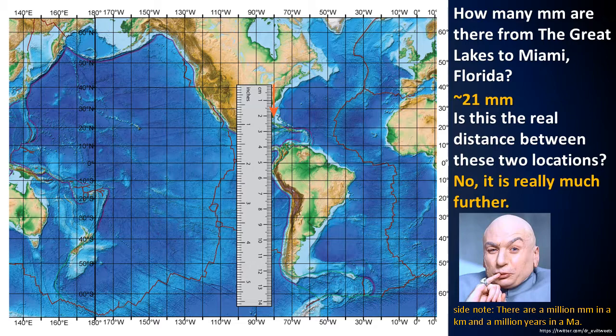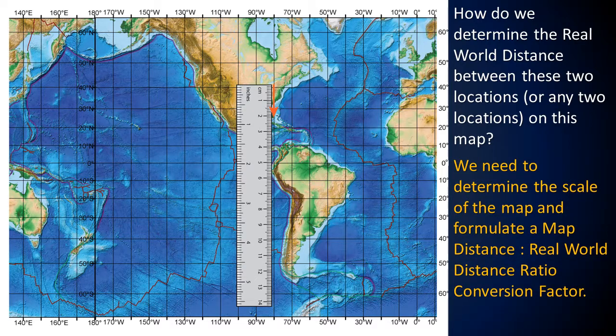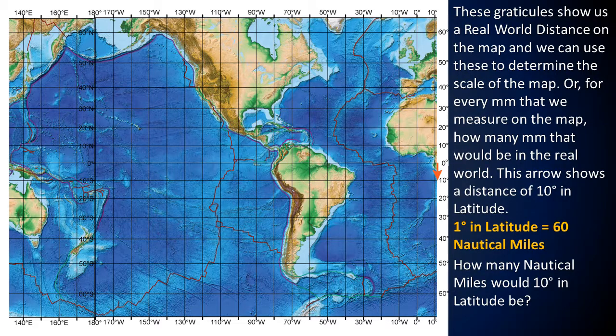To determine the real world distance between locations on this map, we need to determine the scale of the map and formulate a map distance to real world distance ratio conversion factor. These graticules show us a real world distance on the map and we can use these to determine the scale of the map — or for every millimeter we measure on the map, how many millimeters that would be in the real world.